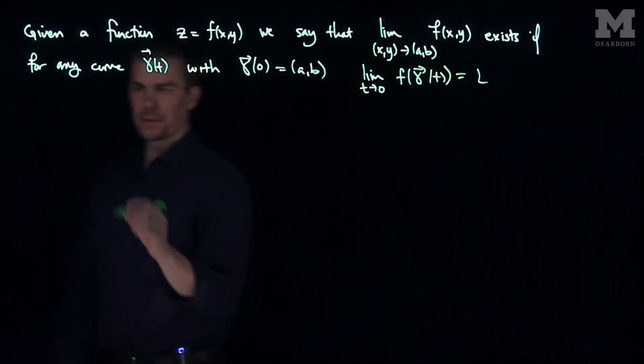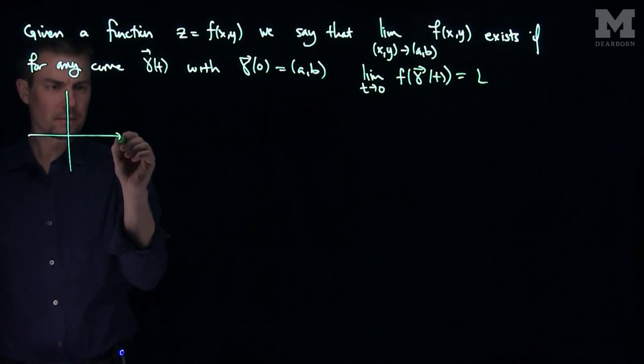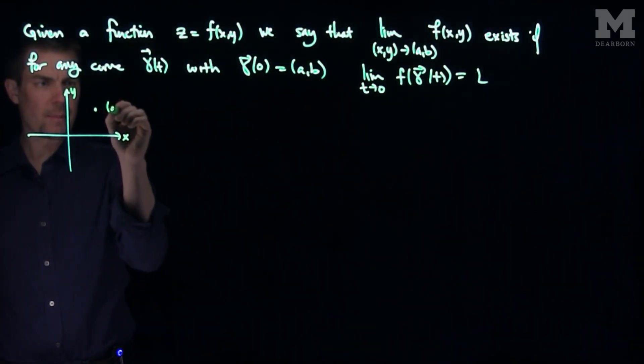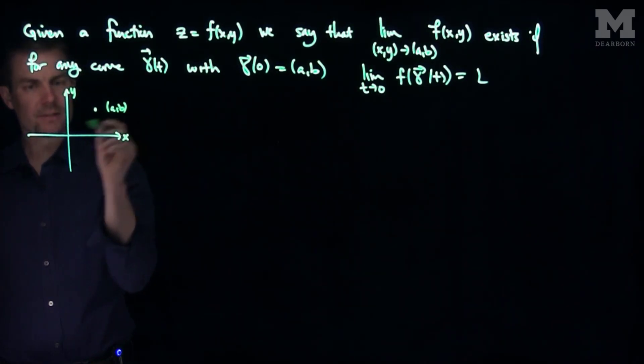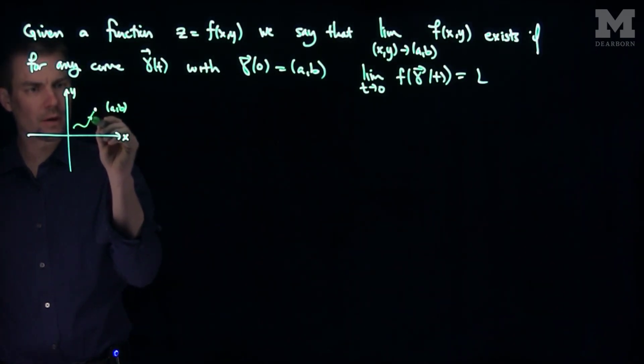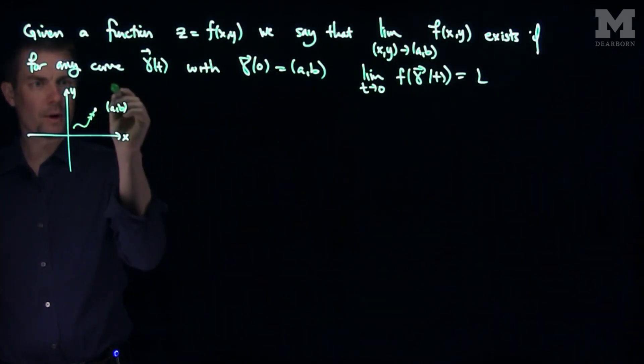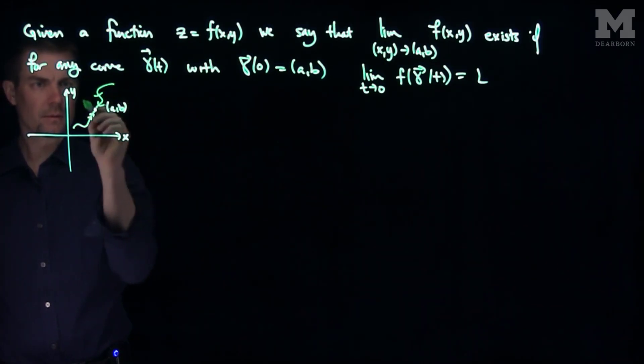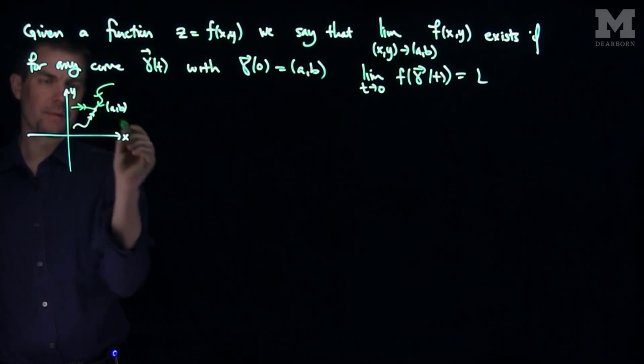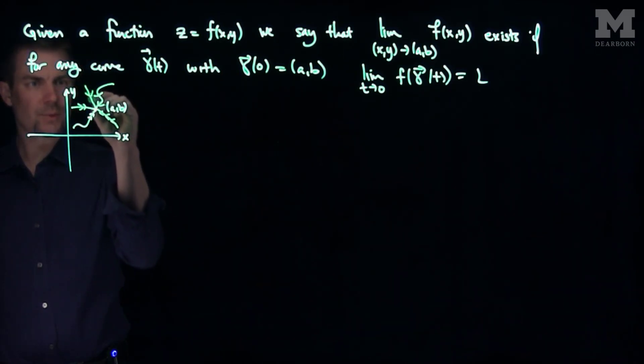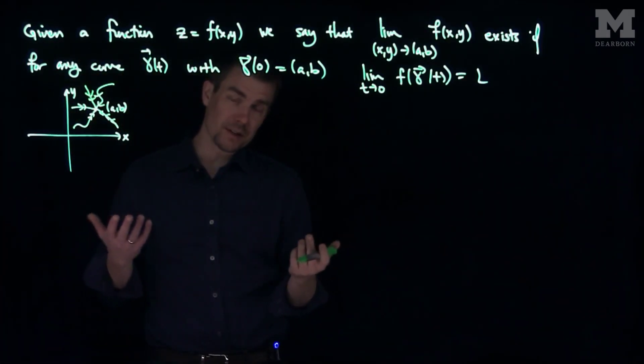So what this means is if I pick a point, here's my x-axis, my y-axis, if I pick a point a, b in space, and I have some function, then I need to look at every single possible curve that approaches that point, of which there are infinitely many, and if on all of those curves, the limit as we get closer and closer to that point gives me the same value, then the limit will exist.